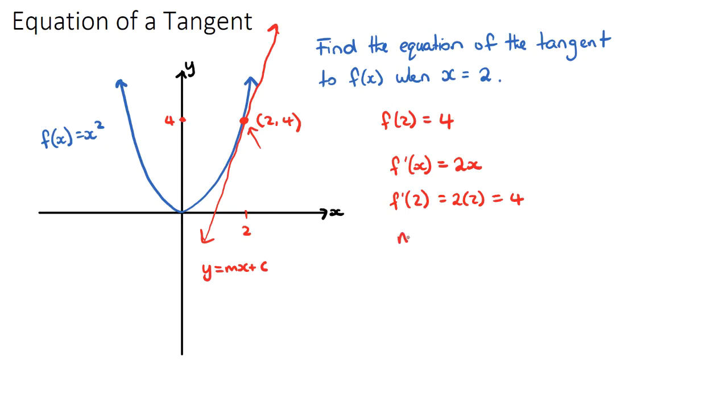And what that means is the gradient, which is m, of the tangent when x equals 2 was 4. Now that we have the gradient at this dot here, this red dot, and we also know the x and the y value at that dot, we can use the equation of a straight line to find the equation of a tangent.